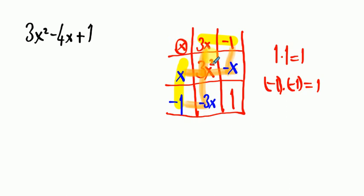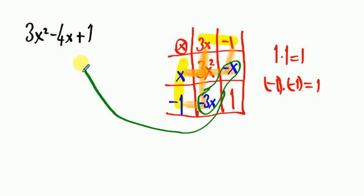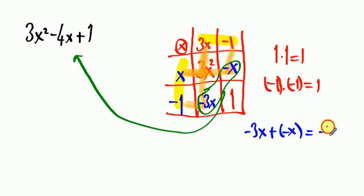Let's check whether this is correct. I'll add these two middle boxes to see if they give me the midterm. Minus 3x plus minus x gives minus 4x, which is the midterm. So what I did is correct.